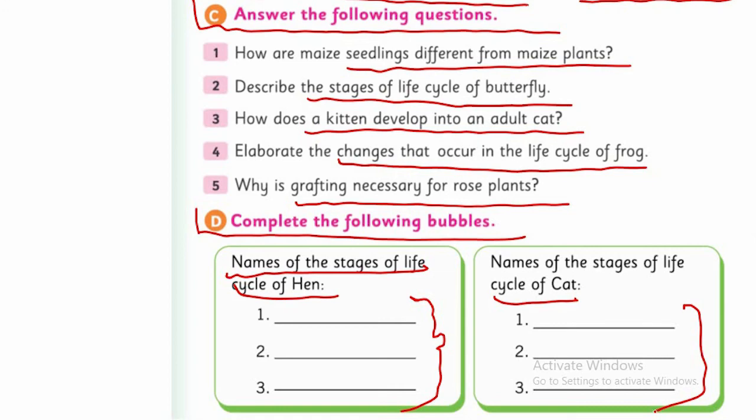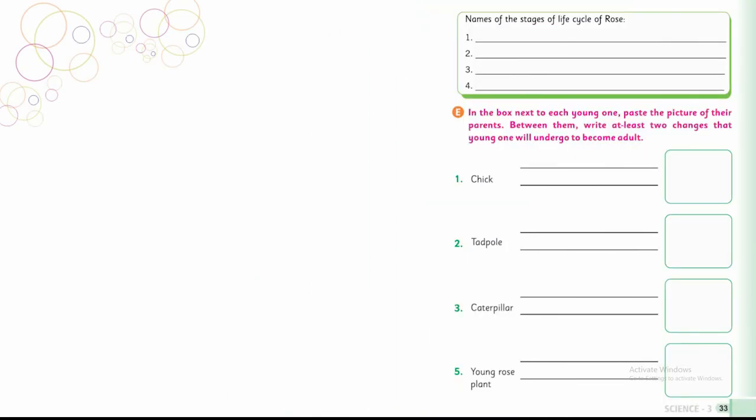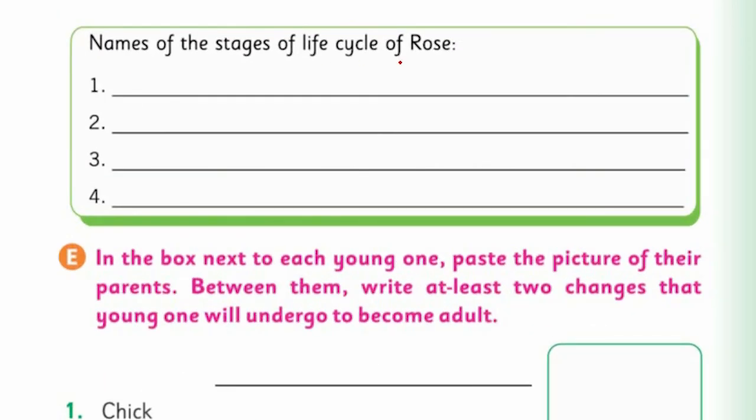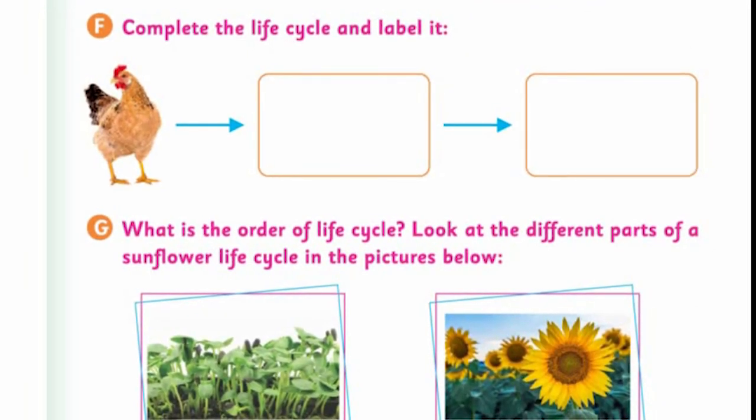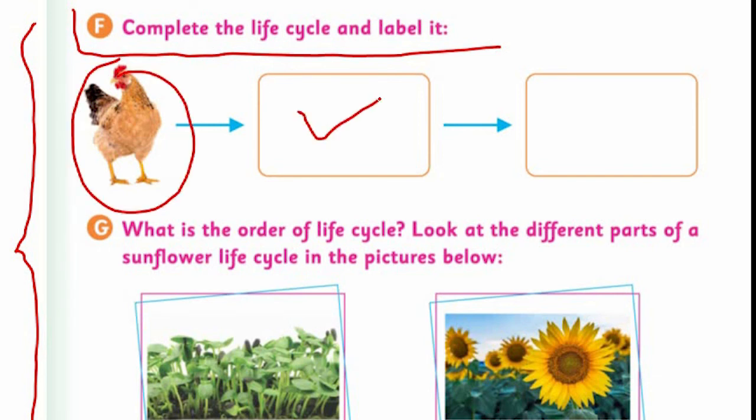Going towards another activity, this is very interesting. Name the stages of life cycle of roses - there are four stages. Write these in this box. I'm going towards the next activity, also very interesting. Dear students, I'm confident that if you perform these activities, your concept about changes in living things will become permanent and you'll never forget these things. With the help of this picture, you need to complete this - there's a hen, and before the hen, what comes? You need to sequence this.